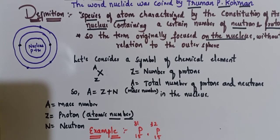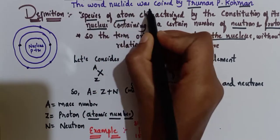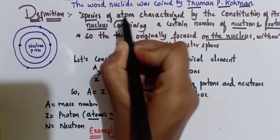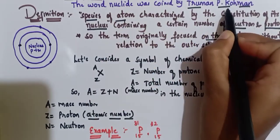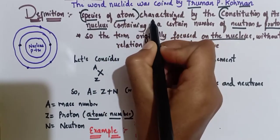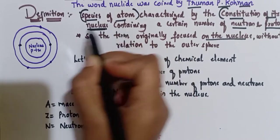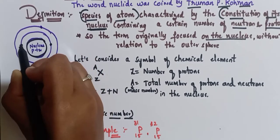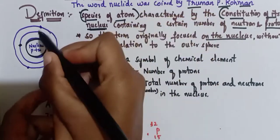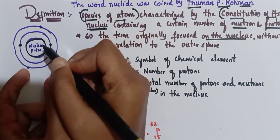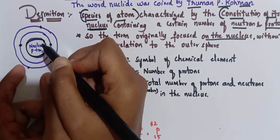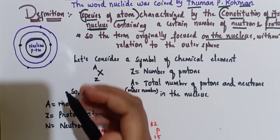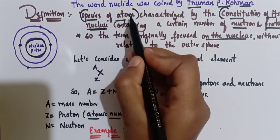Let's see what is the definition of nuclide. The word nuclide was coined by Truman P. Common. He defined nuclide as a species of atom characterized by the constitution of its nucleus. See this diagram here — inside the nucleus, protons and neutrons are present, and in the outer spheres electrons are present. This word nuclide only concentrates on the constitution of its nucleus.